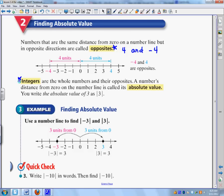All right, now integers are whole numbers and their opposites. So 1, 2, 3, 4, 5, 6, 7, 8, 9. And negative 1, negative 2, negative 3, negative 4, negative 5.